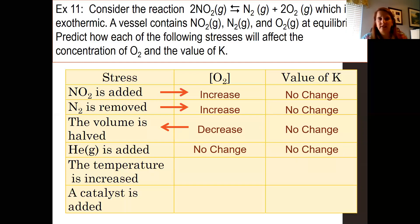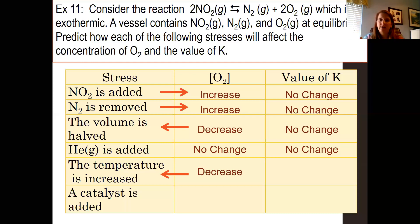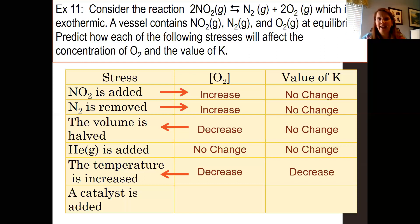The temperature is increased — and this is an exothermic reaction, so heat is a product. If we increase the temperature, it shifts to the opposite side — to the left — which means the concentration of O2 decreases. Now for K: if the reaction shifts left, the concentration of products decreases and the concentration of reactants increases. Since K is products over reactants and we're making more reactants, K gets smaller. A catalyst is added — no change whatsoever when you add a catalyst.